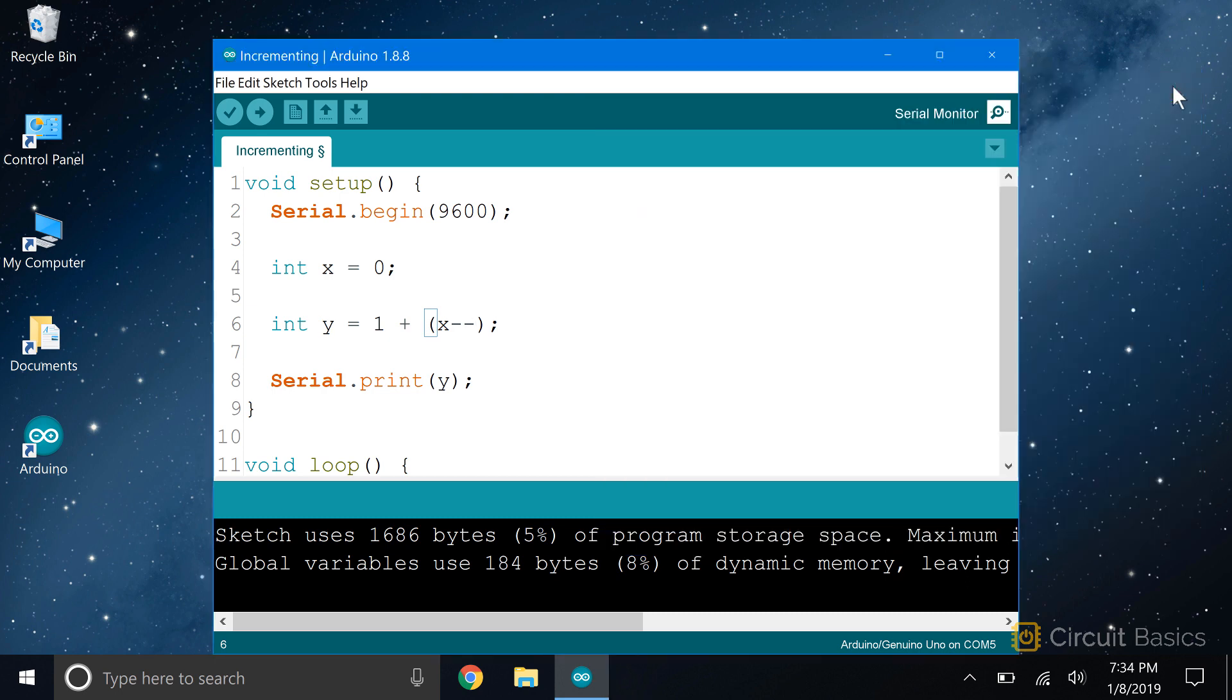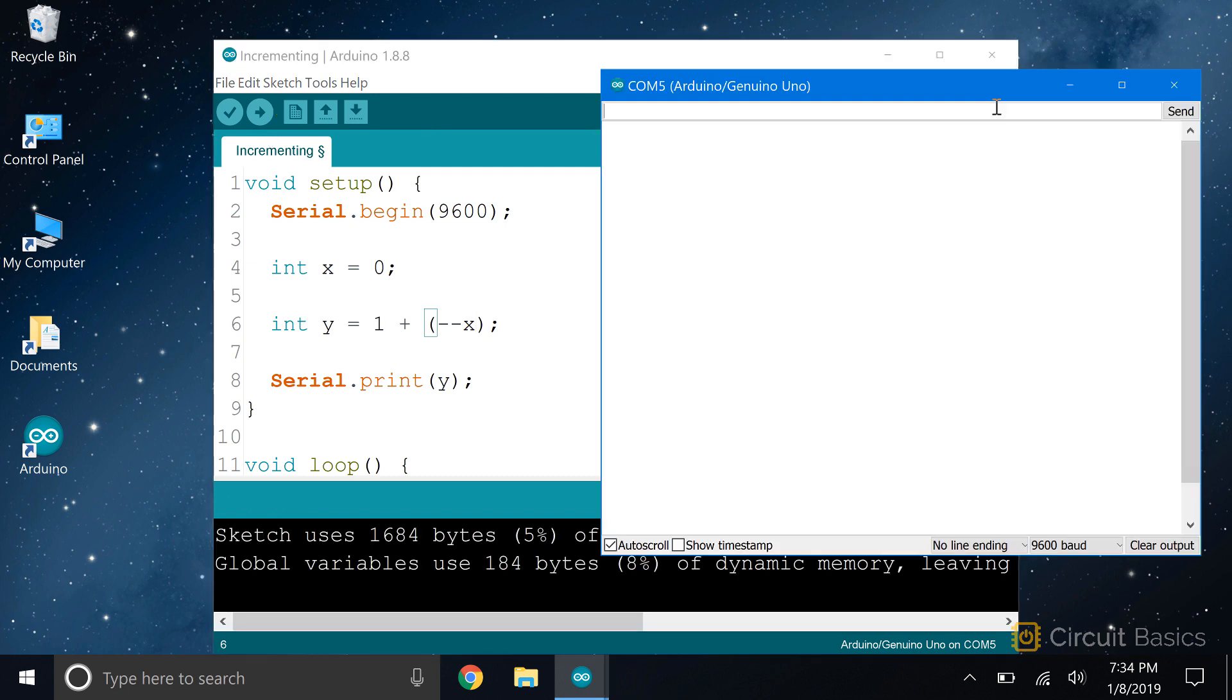As you can probably guess, minus minus x decrements x by 1 before the math is performed. So now y equals 0. Since x was decremented before the math was performed, the formula becomes y equals 1 plus minus 1, which is 0.